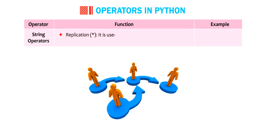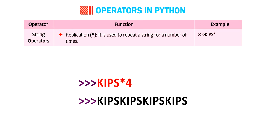Replication. Asterisk. It is used to repeat a string for a number of times. Kips multiply by four. Kips, kips, kips, kips.